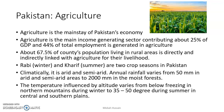Rural communities either run small-scale farms or work in the fields to grow crops and earn their income. Agriculture provides employment to more than 50 percent of the rural population. There are two main crop seasons: Rabi, which is the winter season, and Kharif, which is the summer season.